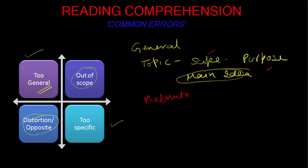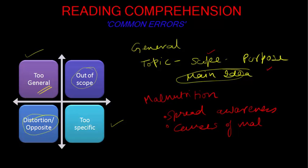Like for instance, in the malnutrition example that I gave you in the previous video, the purpose of the passage, as I told you, was to spread awareness. But if instead of that, you mark the answer choice as the causes of malnutrition, then that choice is too general in nature.